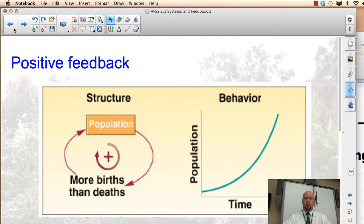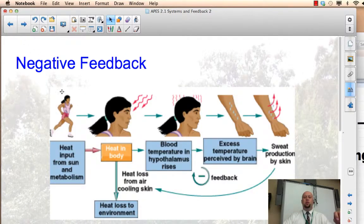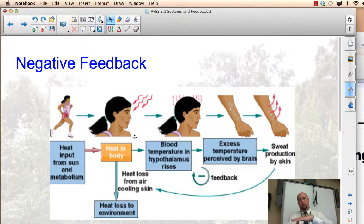Real quick, just to recap, positive, more births means more people, more people have more births, and so that cycle keeps going up, that causes an exponential pattern in growth. Negative feedback means that, in this case, temperature is going up, the sweat helps to cool your body off, and that helps to cool the original situation, so it's lowering the initial inputs.